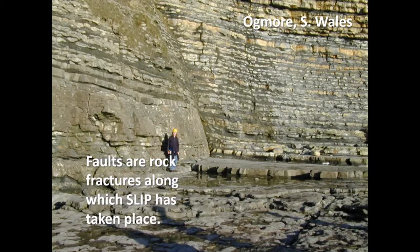A fault can be defined as fractures in rock along which slip has taken place. You get a lot of fractures in rock — you can form joints as well as faults. But faults are different to joints in that faults are planes along which slip has taken place, so one side of the fault has moved relative to the other.